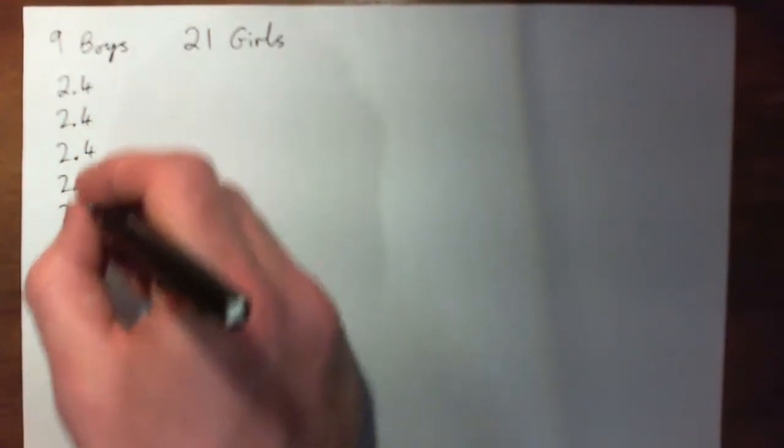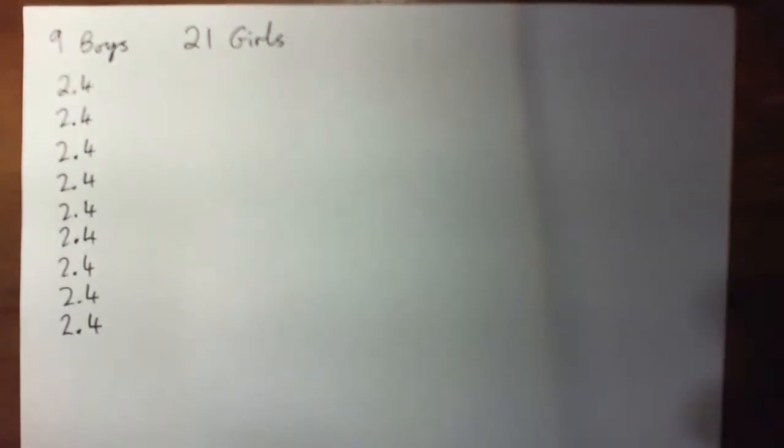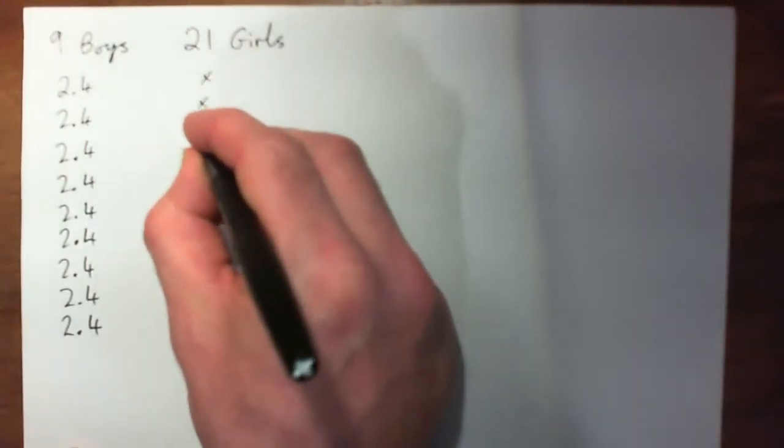Now the nine boys got an average of 2.4 GPA, so it's kind of like if they all got 2.4 that would work out to be the same mean. I can write out nine 2.4s if I want to just for fun. And the girls, we don't know what they got, we don't even know their average. We're trying to find their average, but let's say they all got X.